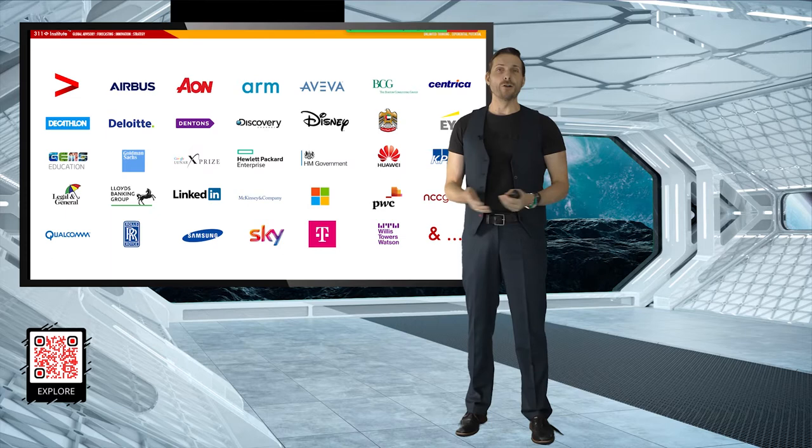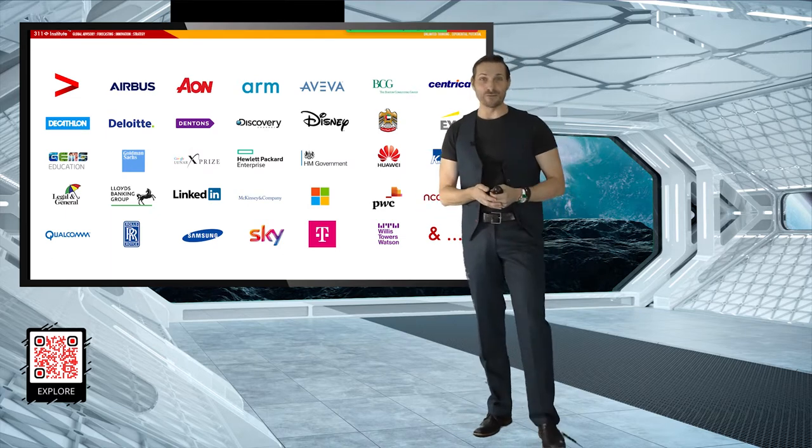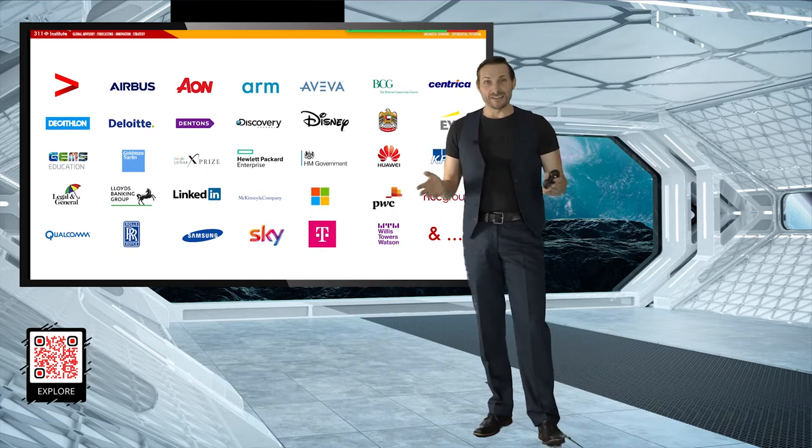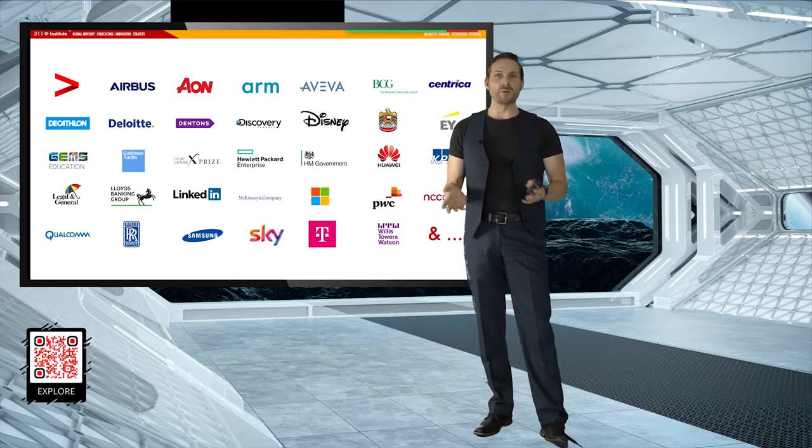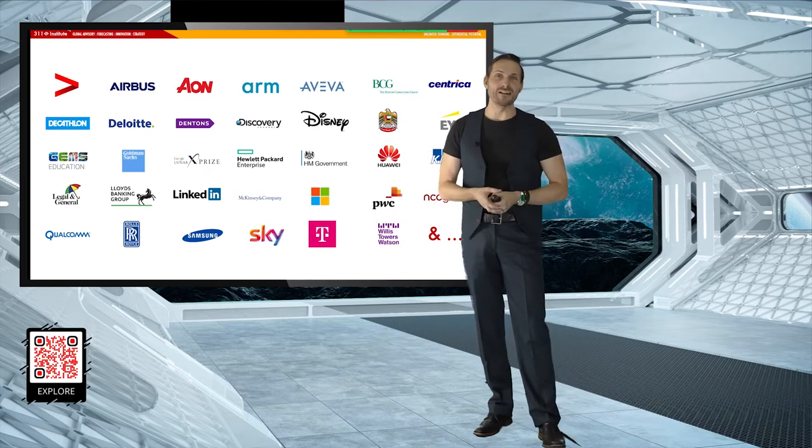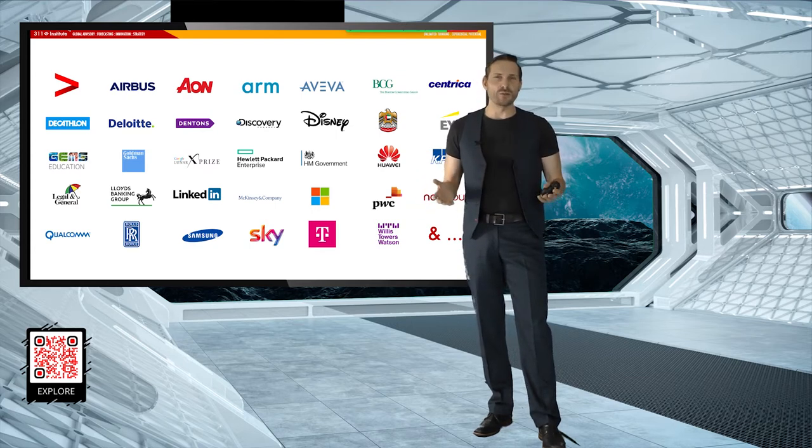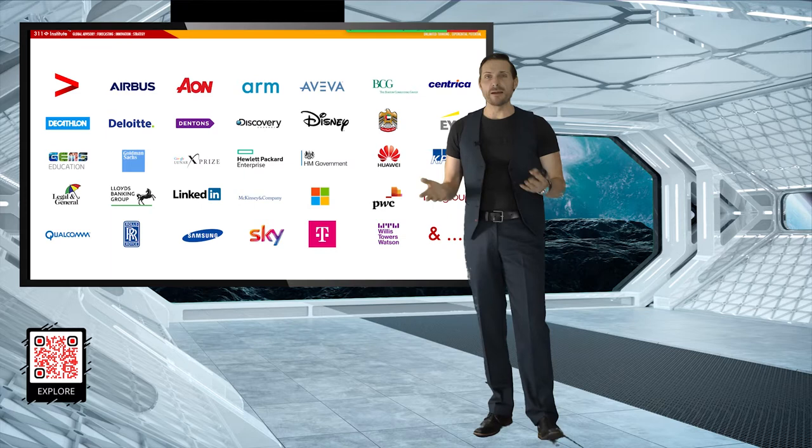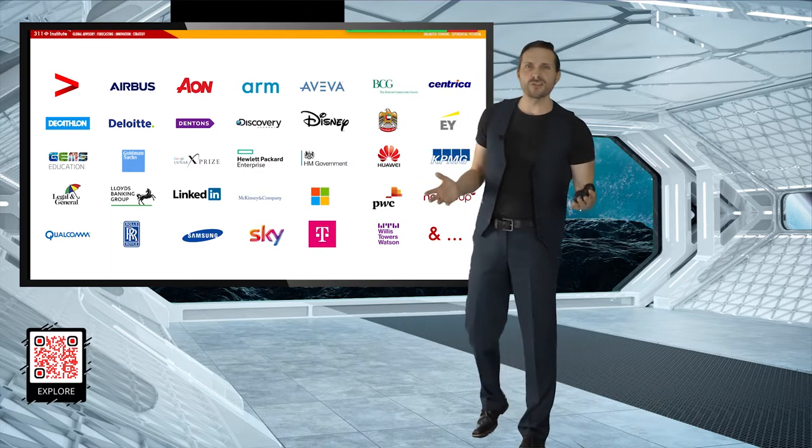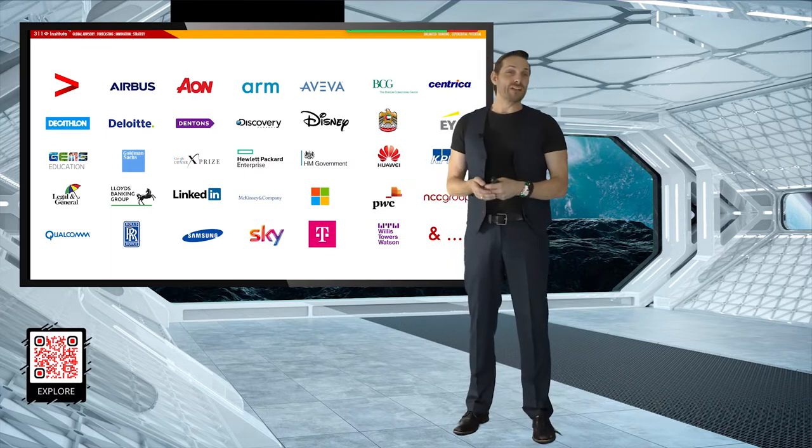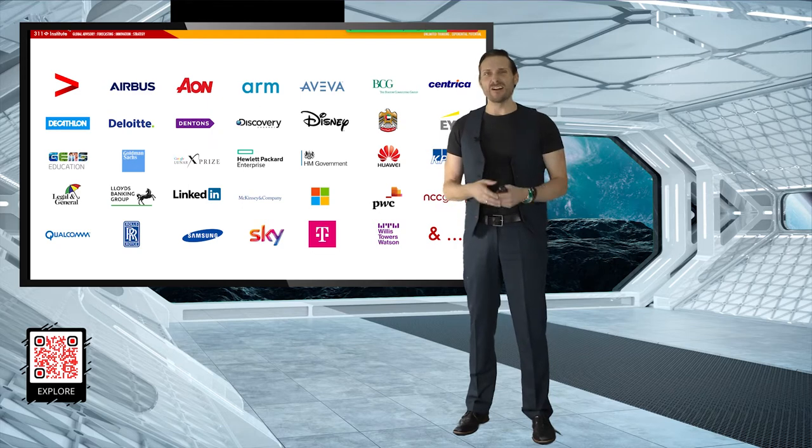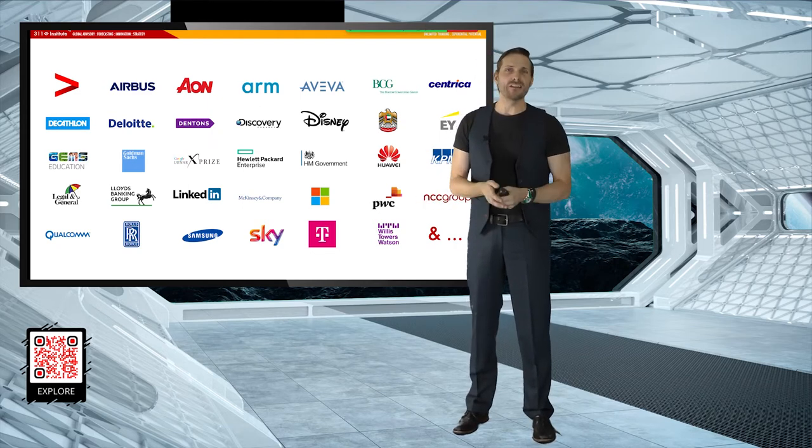If you have a Samsung phone, my little fingerprints are all over that. There's an interesting KX50 report you can download that takes a deeper look into what life looks like in 2069, which is Samsung's 100th birthday. We've got organizations like Denton's, which are the world's largest law firms, especially GEMS, the world's largest private school company, as well as organizations like Ernst & Young, the UAE government, the UK government, and so on.